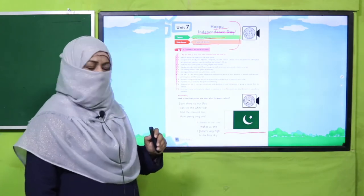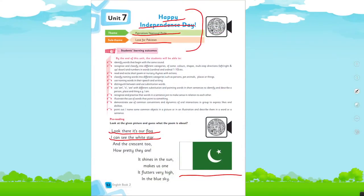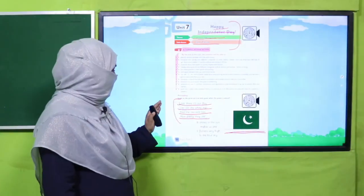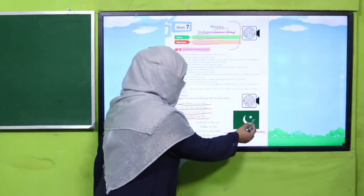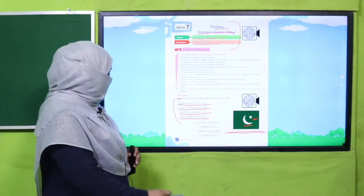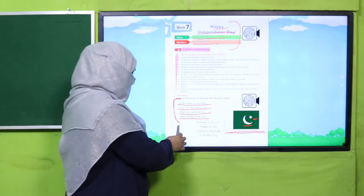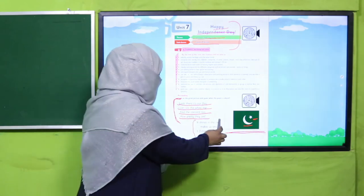So let's see this poem. Look — there is our flag! I can see the white star and the crescent — how pretty they are! It shines in the sun, makes us one, it flutters very high in the blue sky.